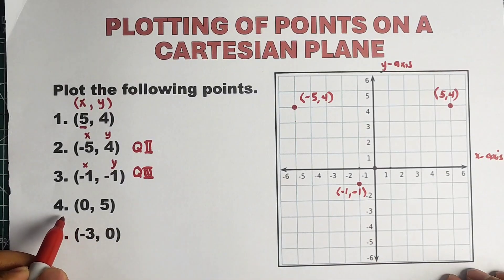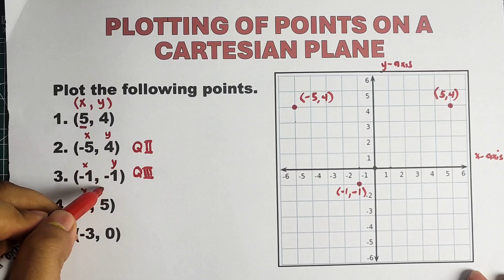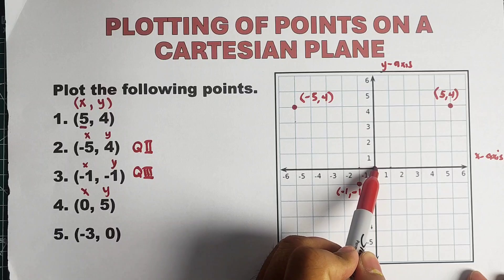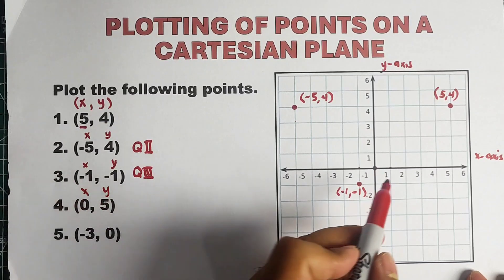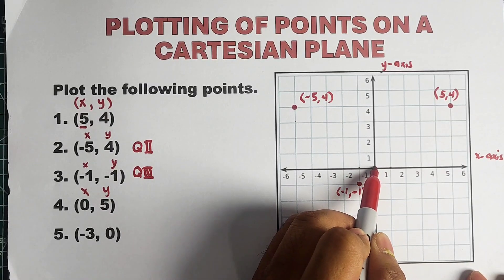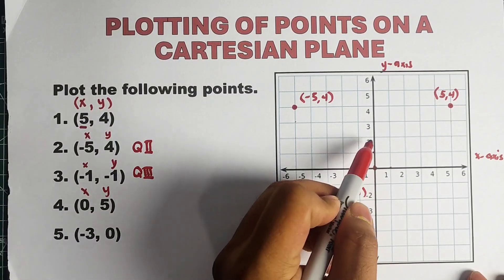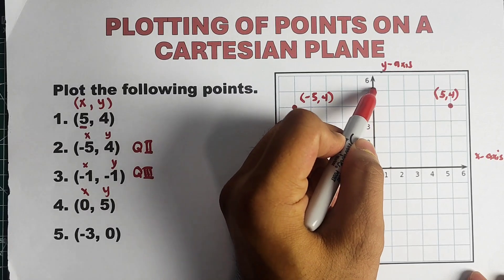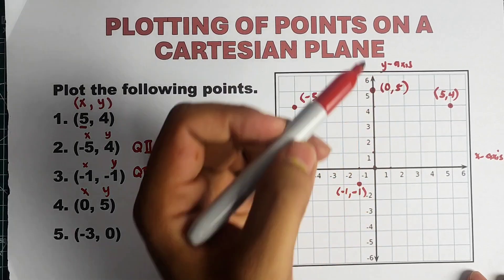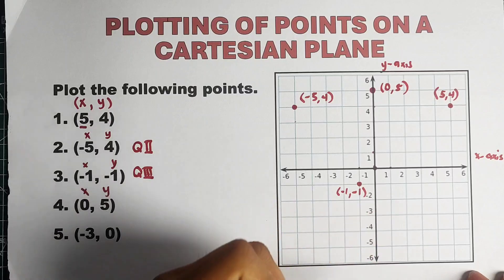Next, what about 0, 5? Here, guys, your x is 0 and your y is 5. So how are we going to plot that? We will start at the origin. The value of x is 0, so we will not move to the left or to the right. We will stay here. And next, your y is 5, so we will move up 5 units: 1, 2, 3, 4, 5. So here is the location of the fourth ordered pair. And as you can see, it is a point located on the y-axis.